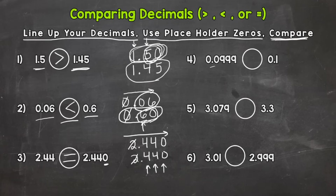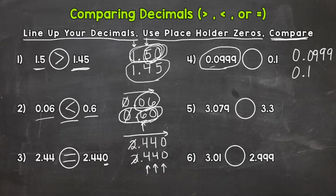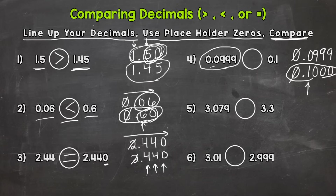Let's check number four. We have nine hundred ninety-nine ten-thousandths and one tenth. Obviously this number is a lot longer and we have nines compared to a one, but if we know our rules and the meaning of our place values we can see — let's put our placeholder zeros first — that one tenth is actually greater. We don't have whole numbers so the zeros we cannot compare. Looking at the tenths place, we have a one compared to a zero, so this number is automatically greater. One tenth is greater. So we read it from left to right: nine hundred ninety-nine ten-thousandths is less than one tenth.